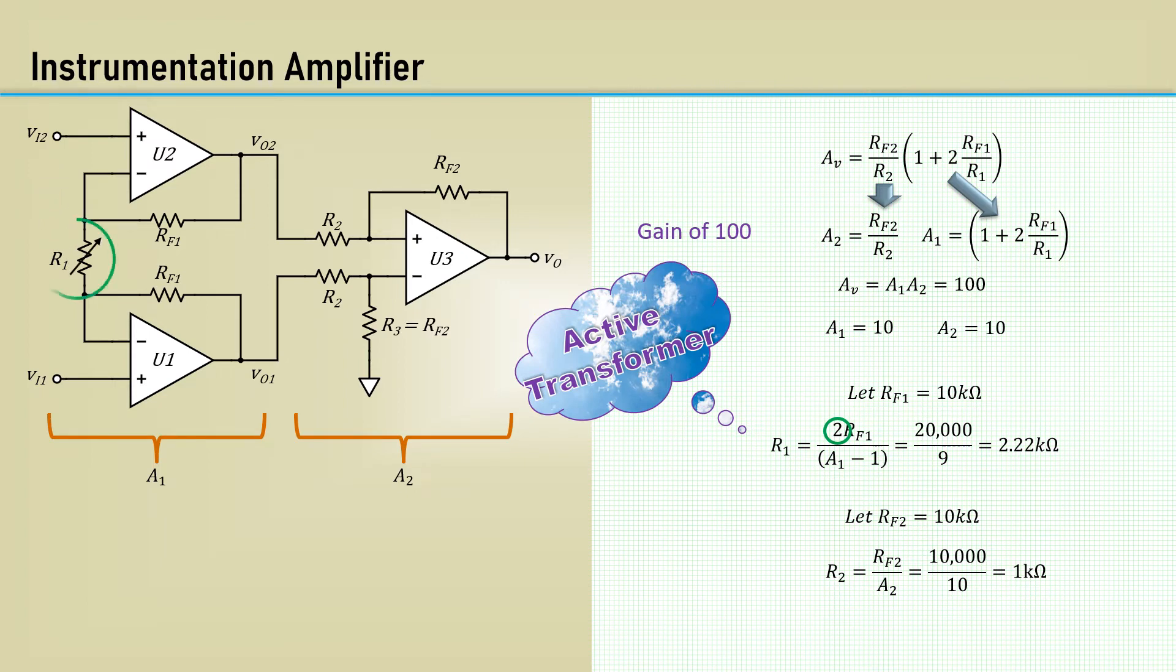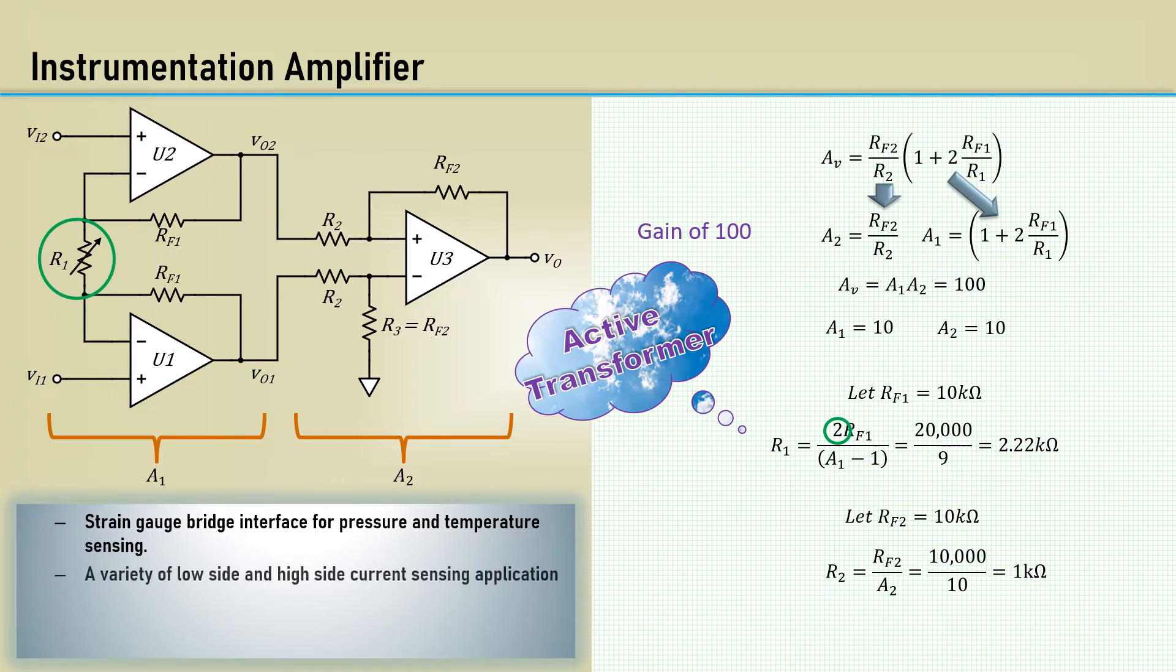Applications include strain gauge bridge interface for pressure and temperature sensing, a variety of low side and high side current sensing applications, medical instrumentation. It is actually used in ECG connections. It is used for power supply current and voltage monitoring.